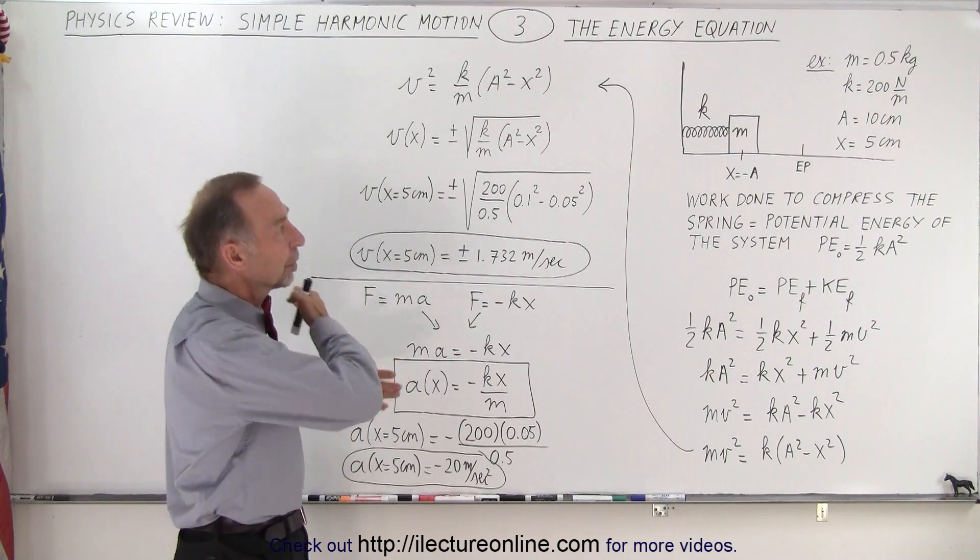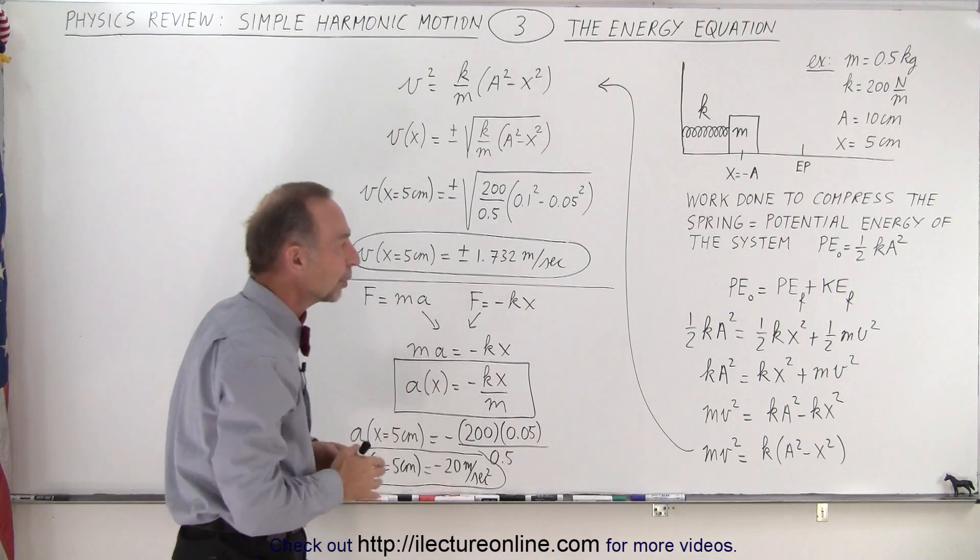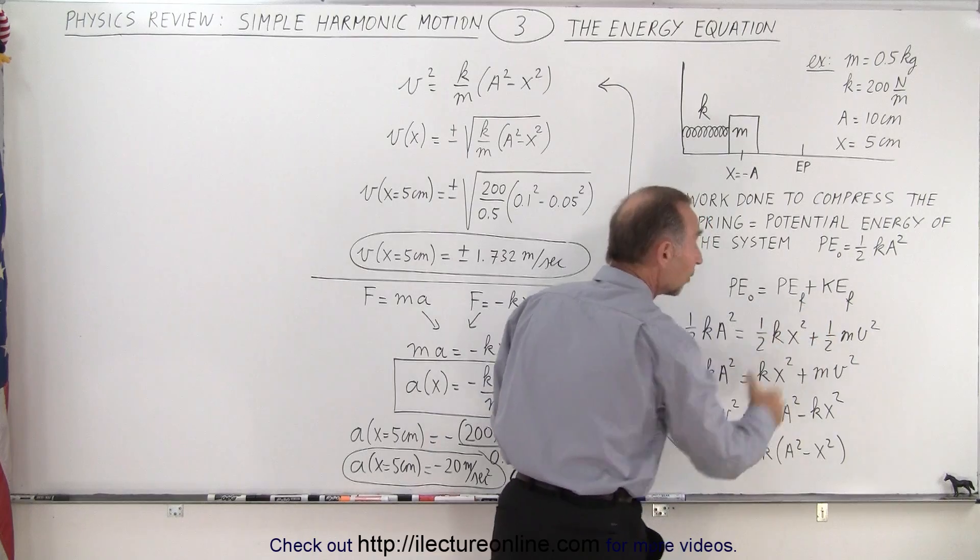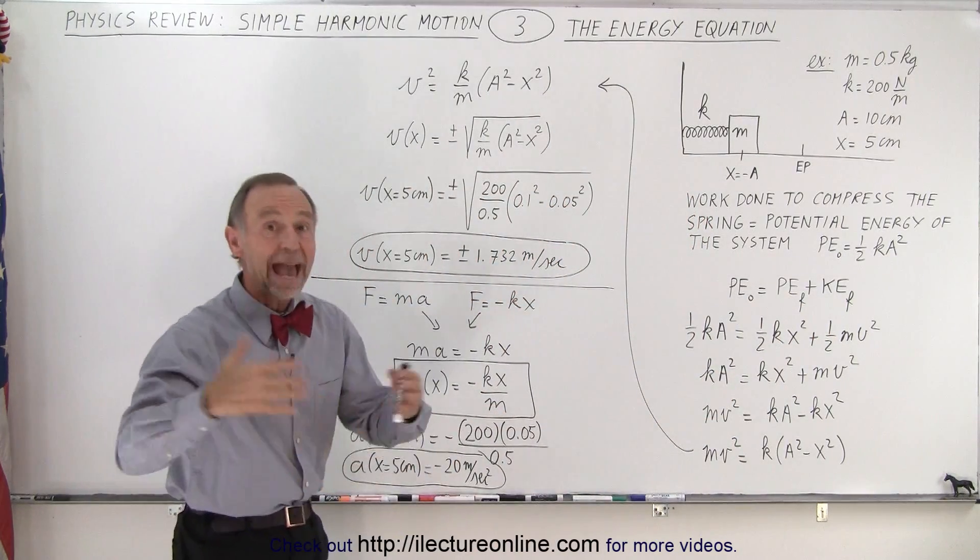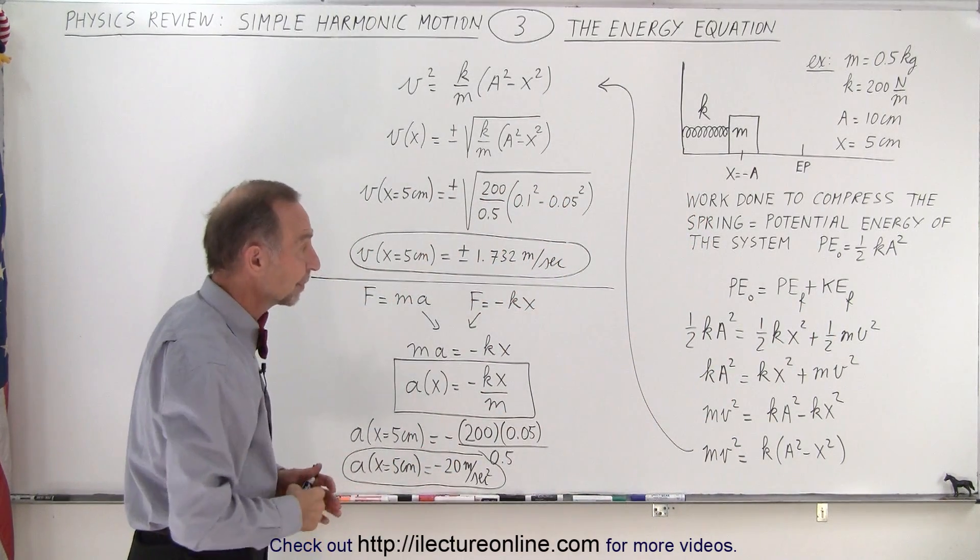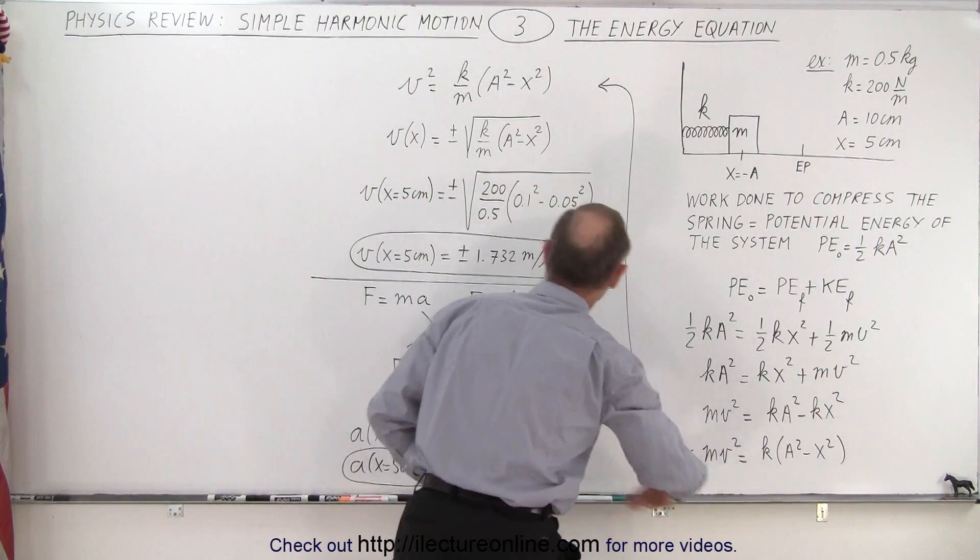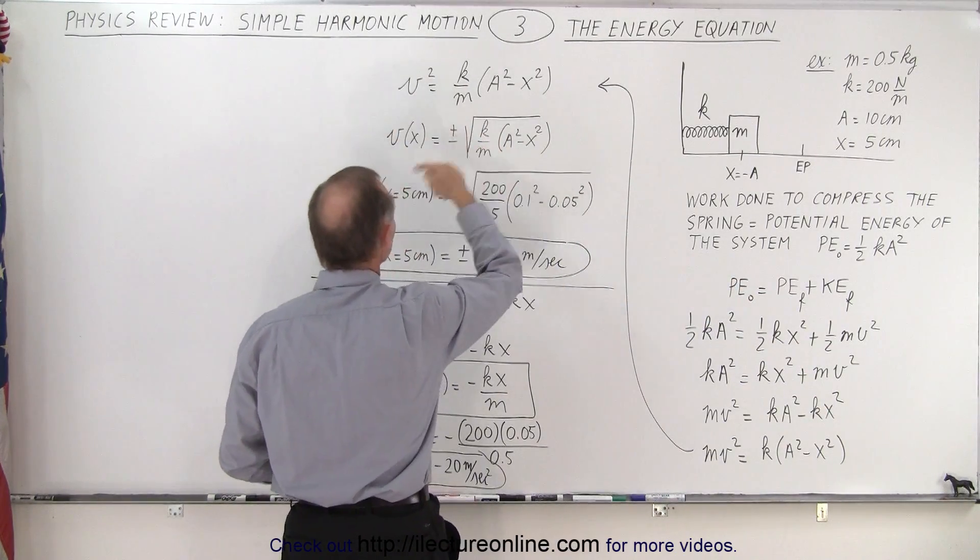After we let go, the object will start oscillating back and forth, and the initial potential energy stored in the system will then always equal to the sum of the potential energy and the kinetic energy after the object begins to move. If we turn that into an equation, then we can solve that equation for v, and that's where the equation comes from.